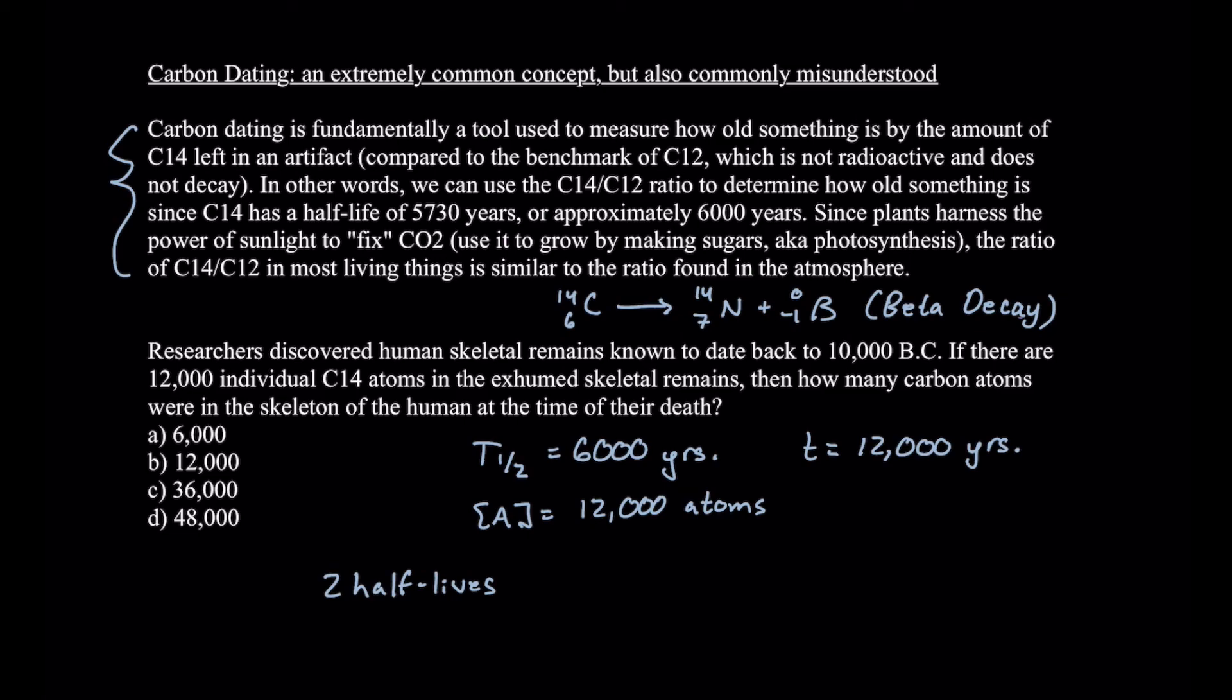And if we're left with 12,000 atoms after two half-lives, that means in order to get our original, we just need to take 12,000 and multiply it by 2 two times. So number 1, 12,000 times 2 equals 24,000. And number 2, 24,000 times 2 is 48,000. So our answer is D, 48,000.